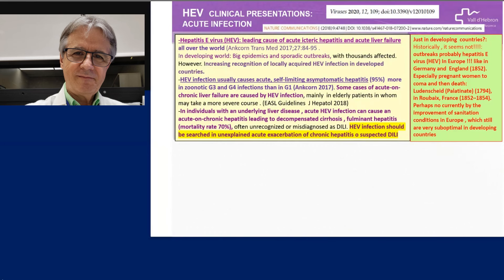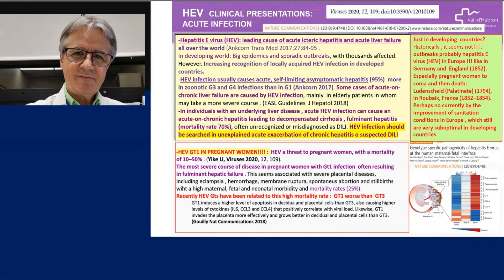One of the most worrisome characteristics of hepatitis E virus infection is that it poses a threat to pregnant women with very high mortality — 10 to 50%. The most severe disease is in pregnant women with genotype 1 infection, which often results in fulminant hepatic failure associated with severe placental disease including eclampsia, et cetera. A recent study by Gulli and co-workers in Nature Communications found a relationship between the genotypes, clearly indicating that genotype 1 is worse than others.